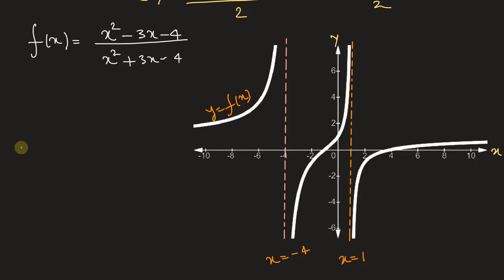That means the tangents will meet at infinity. And therefore, at x is equal to negative 4 and x is equal to 1, f(x) is not continuous.